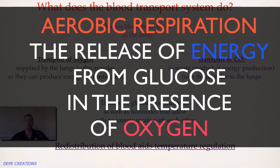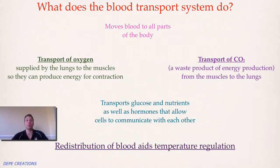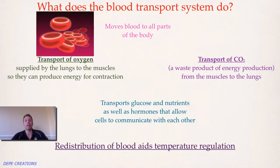Cells require oxygen for aerobic respiration, so we need to get oxygen to those cells. If we're talking about working muscle cells, blood is the vehicle for oxygen to get there. It comes from the lungs because we breathe in oxygen, and it's transported by the blood down to the working muscles. That's one reason why the blood transport system exists.